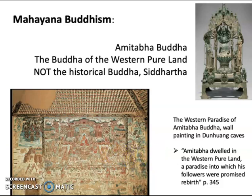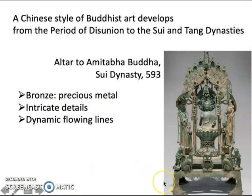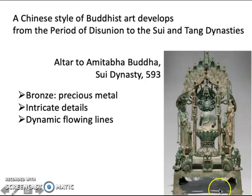This is a cave painting. In terms of a Chinese style, the distinctive artistic sensibility that we see in Buddhist art in China emerges in the Sui dynasty. We can talk about the material — this is bronze. We know that bronze has been a precious metal since the Zhou dynasty, associated with contact with the spiritual realm, with the guidance of the ancestors. So it's very appropriate, in terms of Chinese cultural traditions, to apply it to a representation of Amitabha Buddha. And just as we saw in Shang and Zhou dynasty bronzes, there are these amazing intricate details.